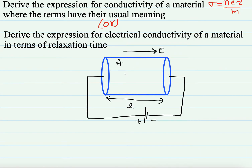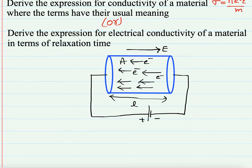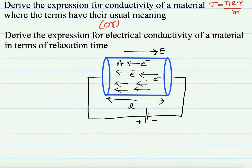In the conductor there are some free electrons. Whenever you apply the electric field, a force is experienced on the electrons. Since the electron is a negative charge, the direction of force on each electron is opposite to the direction of the electric field. So all the electrons are moving opposite to the direction of the electric field. The drift velocity — the average velocity of all the electrons — is given by: vd equals eE by m into tau, where tau is the relaxation time.